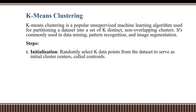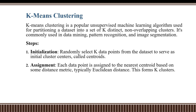We will see the steps in K-Means Clustering. First, we will randomly select K data points. If we have K equals 2, then we will select two data points in the whole dataset. We will assign initial cluster centers, which we can call centroids. We will assign each data point to the nearest centroid, typically using the Euclidean distance method.